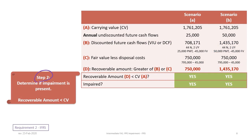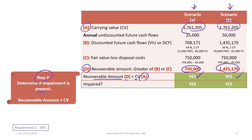The next step is to determine whether or not impairment is present. We simply ask: is the recoverable amount (item D) less than the carrying value (item A)? If D is less than A, then we have impairment. Under scenario A, the recoverable amount is $750,000 compared to a carrying value of $1,761,205 — the recoverable amount is lower, so we have impairment. Under scenario B, we compare the recoverable amount of $1,435,170 against the carrying value of $1,761,205 — the carrying value is still higher, so impairment is evident under scenario B as well.